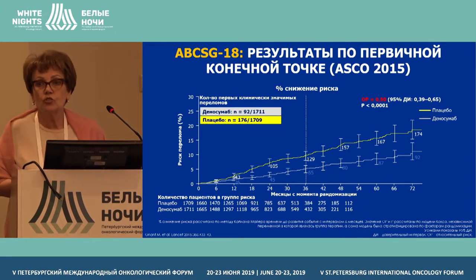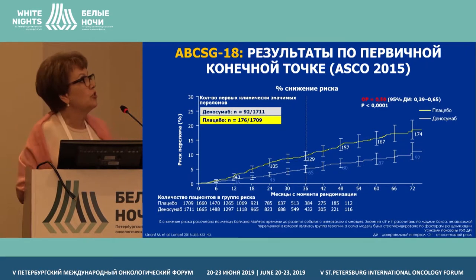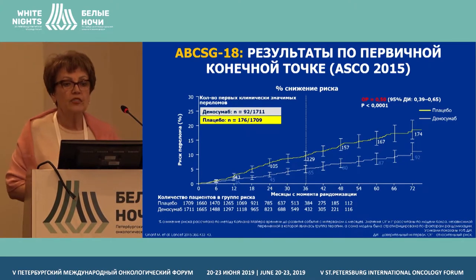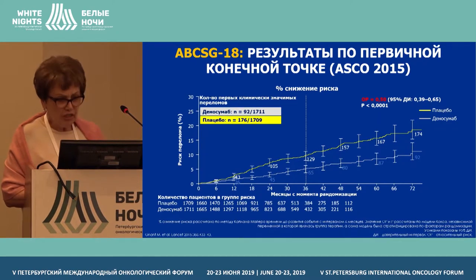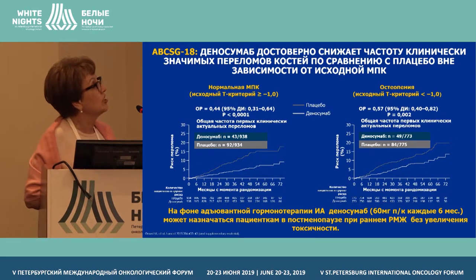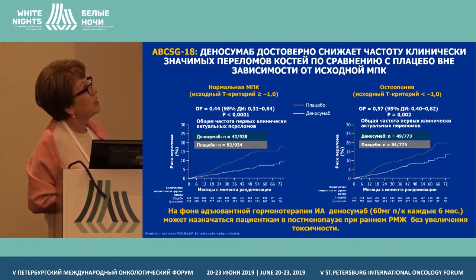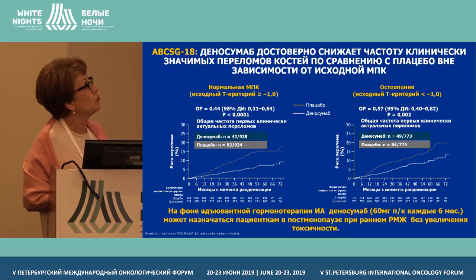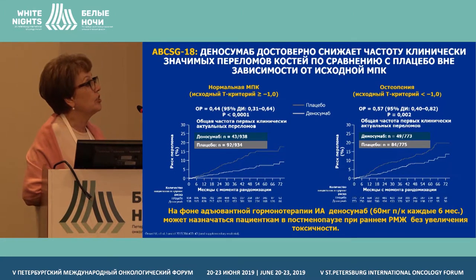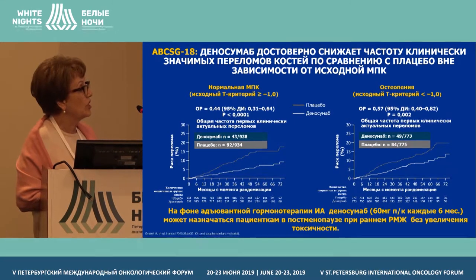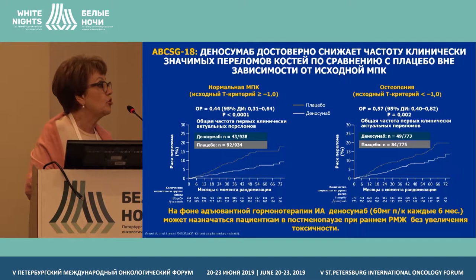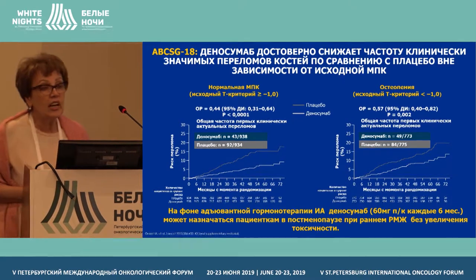The investigator promoted these results, stating that denosumab lowers the risk of fractures, therefore it is necessary to administer it and include this medication in regulations and standards. Denosumab lowered the frequency of significant fractures comparing to the group that received placebo, and on the background of adjuvant hormonal therapy, denosumab can be prescribed to patients in menopause with early breast cancer without increasing toxicity.